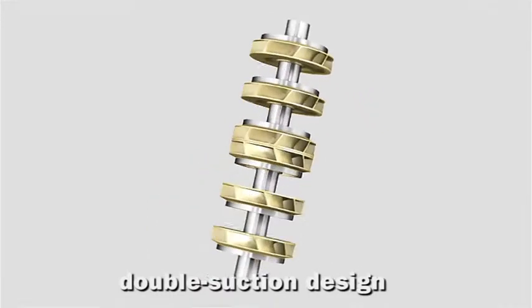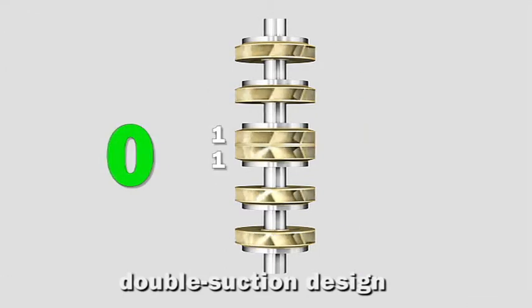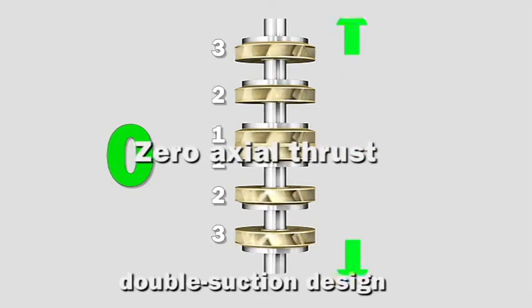Thanks to the double-section design, the active forces cancel each other out. For the unit, this means zero axial thrust and minimal load.